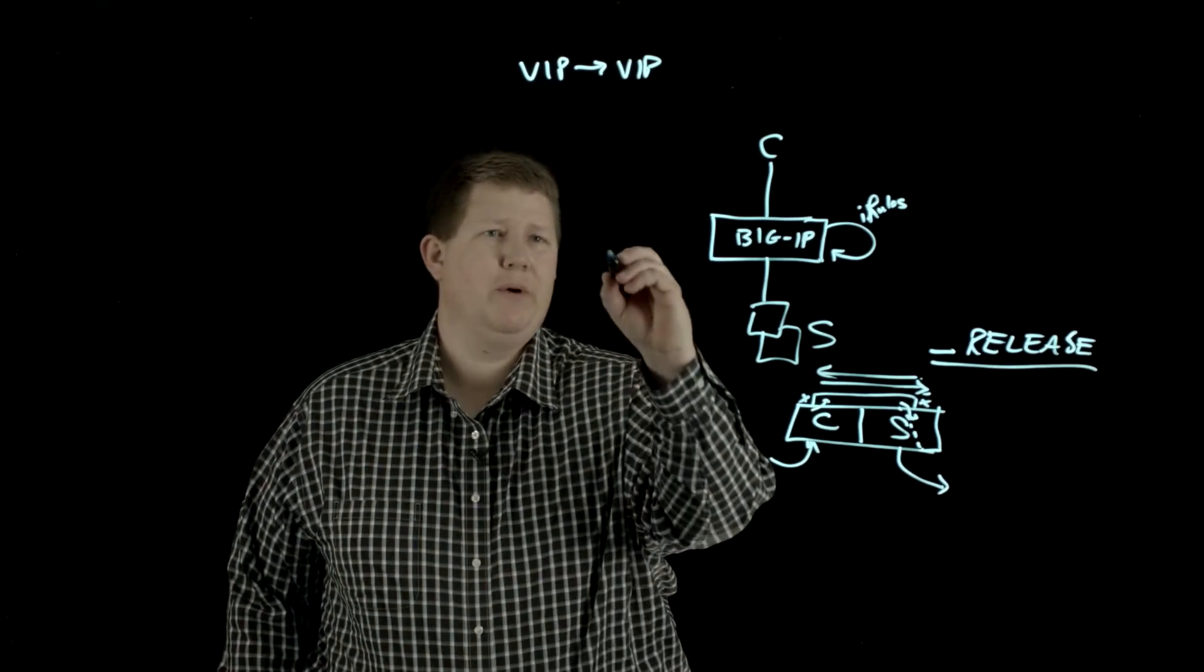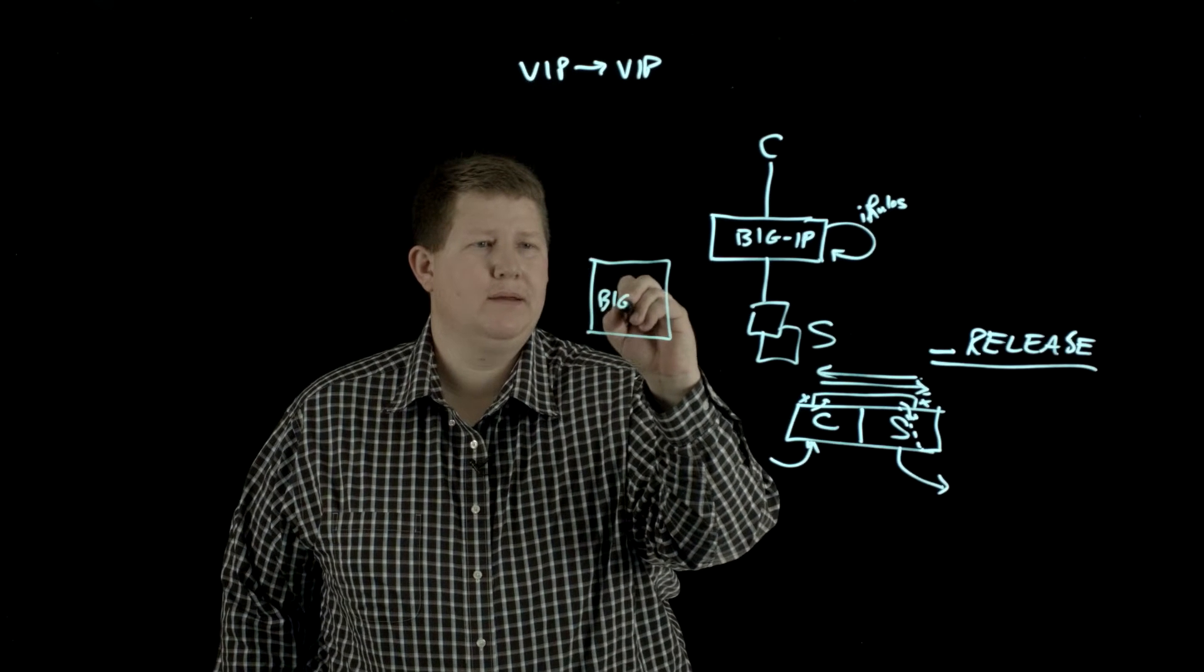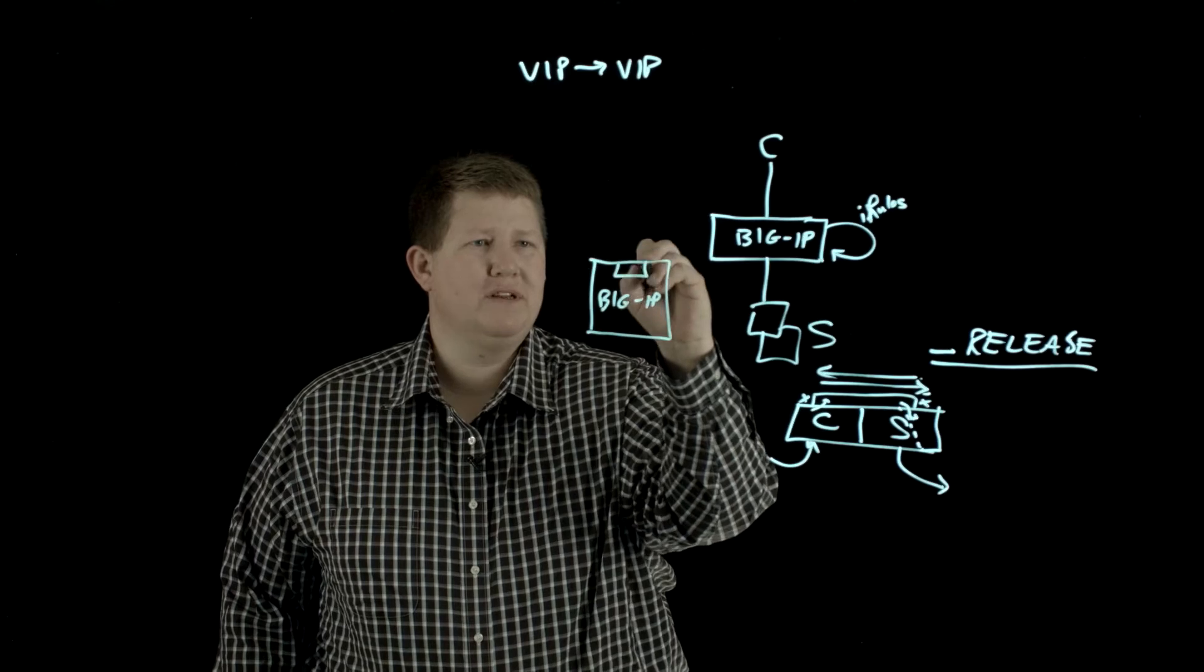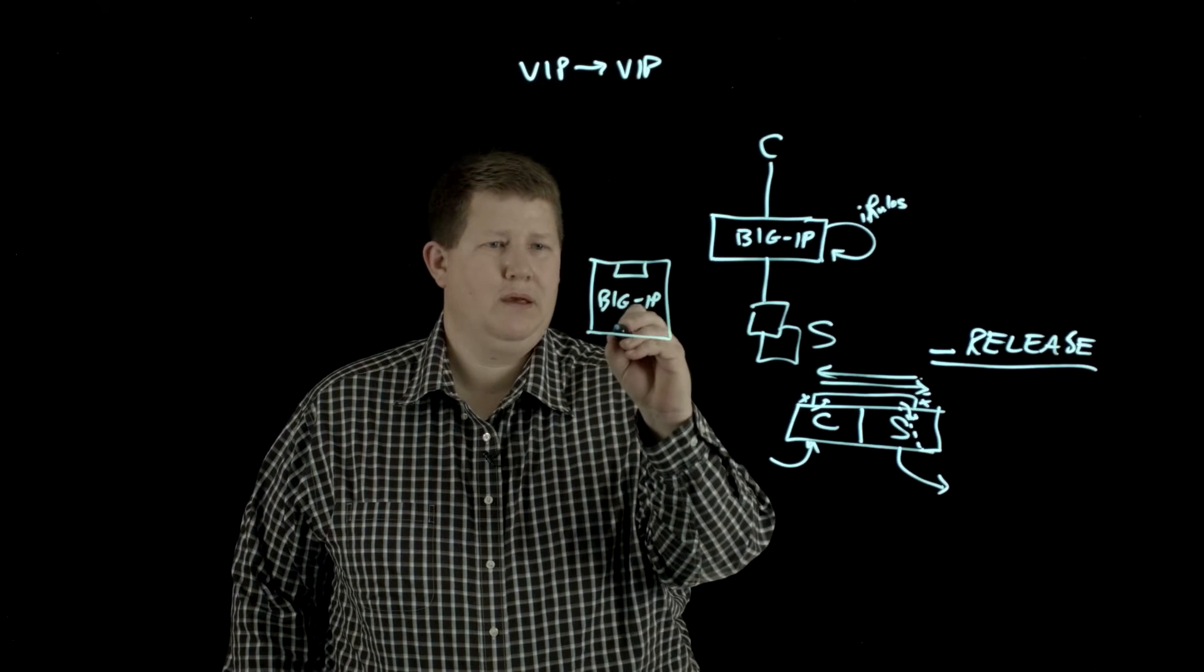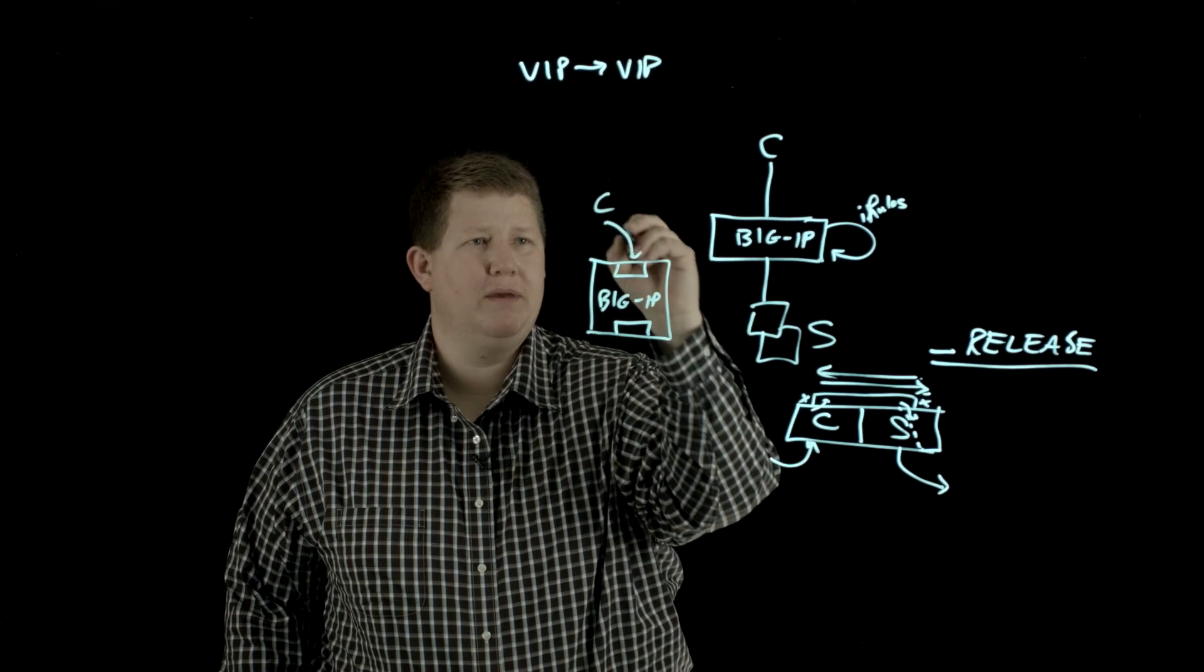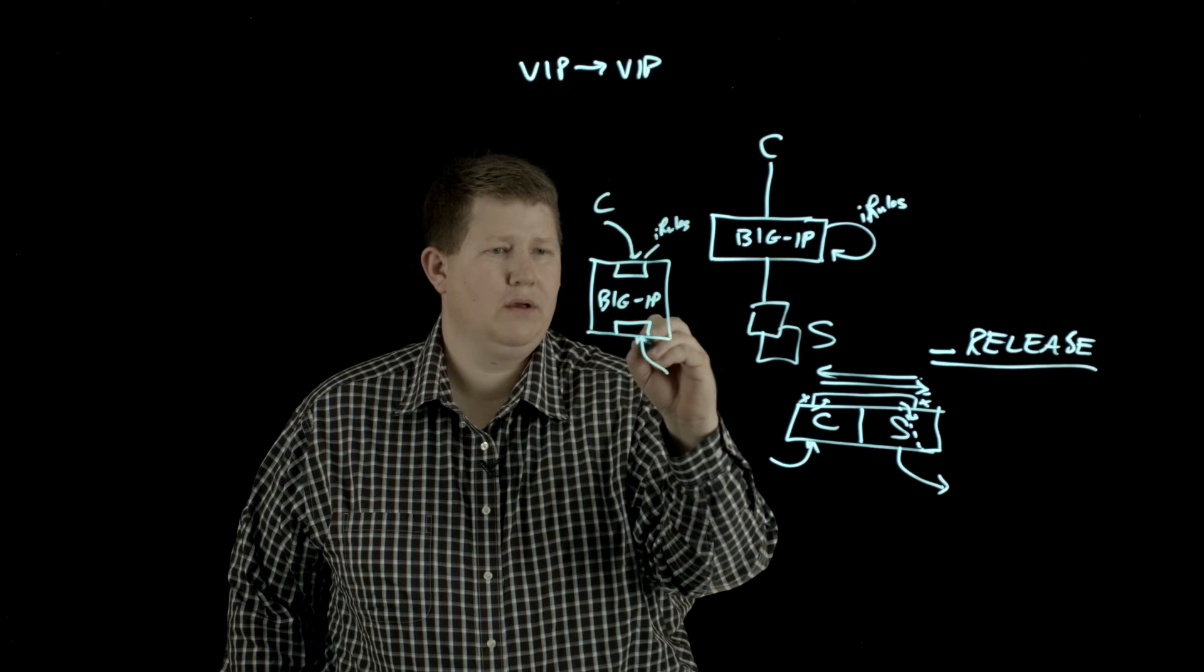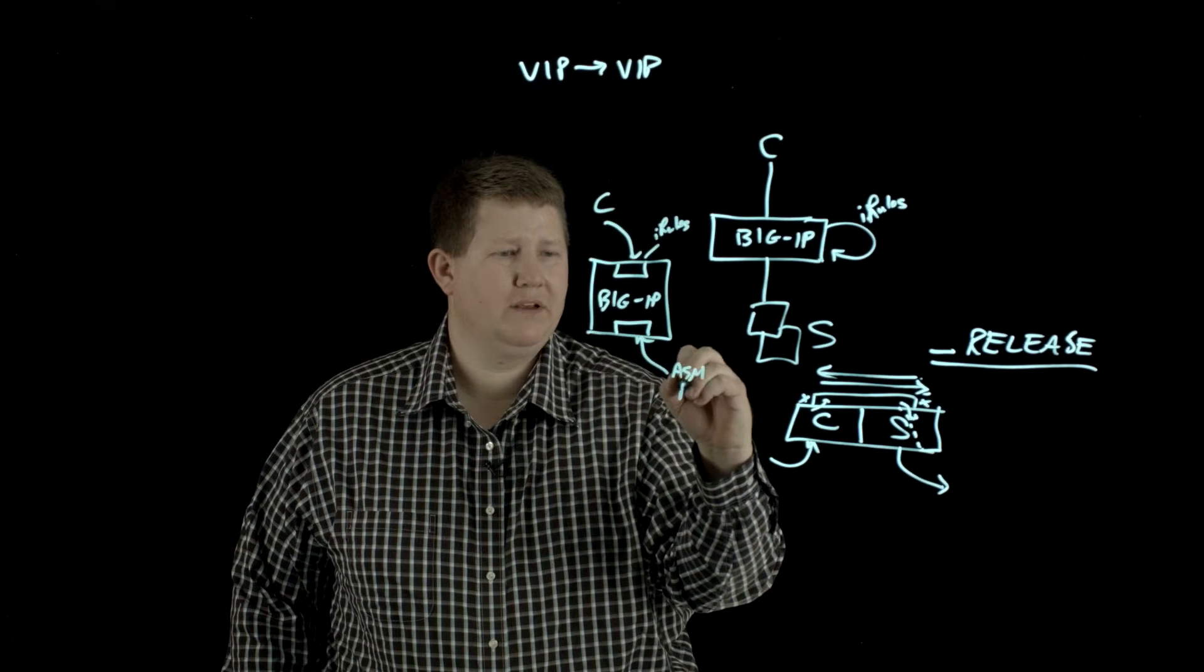So, one of the things that we came up with was we had, again, our big IP, and we had a front side VIP, and then we had a back side VIP. And on this VIP, as client traffic came in, we did iRules here.